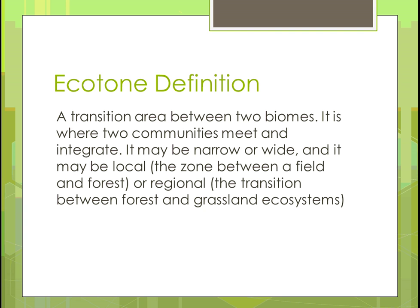An ecotone is probably something you haven't heard of, but basically it's a transition area between two biomes. A biome could be just two different farms we're looking at, or it could be larger than farms. When they come together, what things are there in that transition area that are going to affect one another? It could be a narrow area or a wide area, local, like between a field and a forest, or it could be regional — a transition between a whole forest and a prairie or grassland ecosystem. An ecotone is that area in between that might be affected by both of those two areas or biomes.